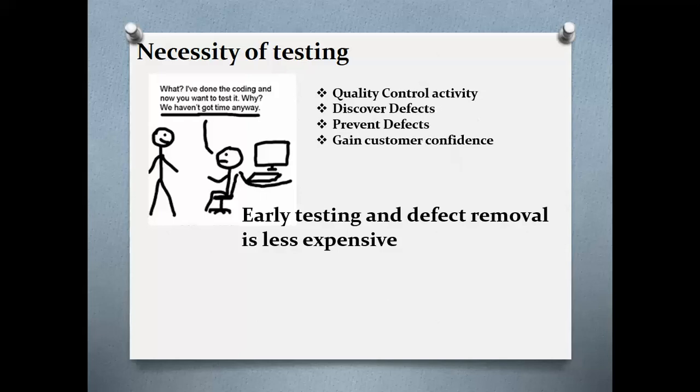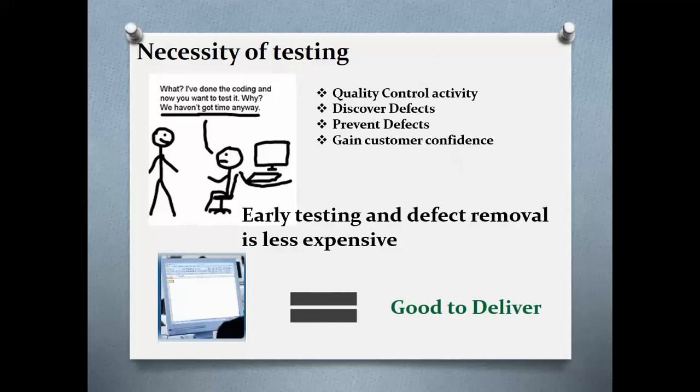Other than ensuring quality, you should also consider the end user's point of view. For example, consider a word processor. It may have few errors in the application, but as long as the user can use it to type documents and format them, the software is good to deliver to the end user, even though there are few errors in it.